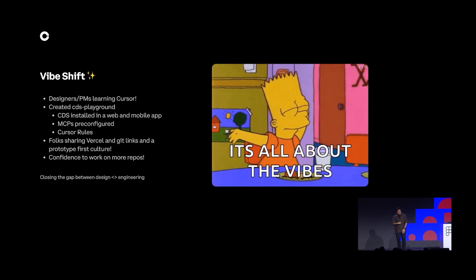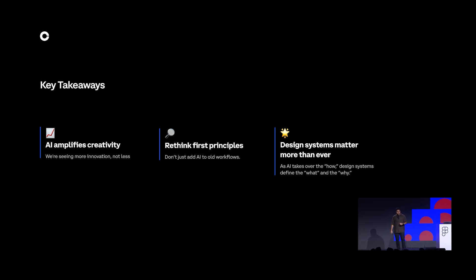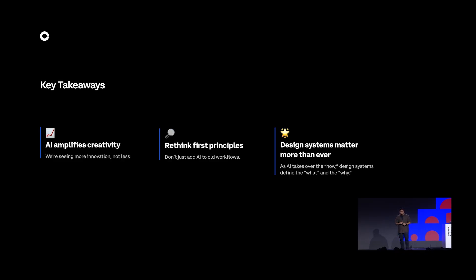We're also seeing tighter collaboration between designers and engineers, leading to a higher bar of creativity and execution. Here are some takeaways: first, AI amplifies creativity — we're seeing more innovation, not less. Coinbase is embracing AI tools and wants to make sure every engineer and designer is AI-enabled. Second, rethink from first principles — in this new world with AI tools, we've seen much higher success in just rethinking and building from the ground up instead of adding AI to older workflows. And finally, design systems matter now more than ever — AI tools are changing the way we work, and design systems are how we ensure that craft scales.